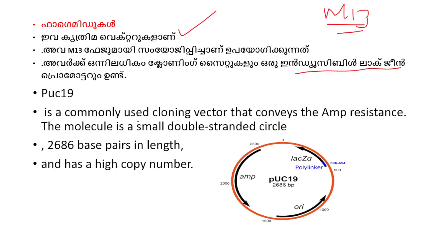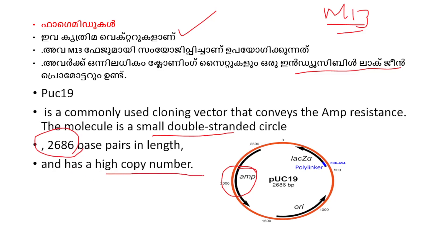This is PUC-19, a cloning vector. It has ampicillin resistance genes as marker genes. This molecule is a small double-stranded circle with a base pair length of 2686 base pairs and a high copy number.